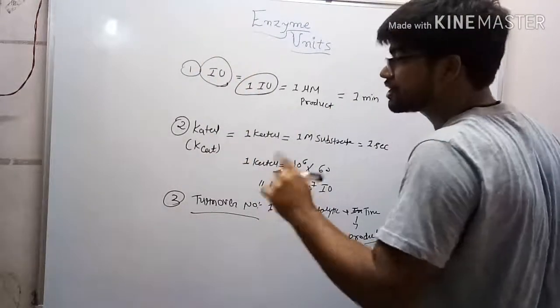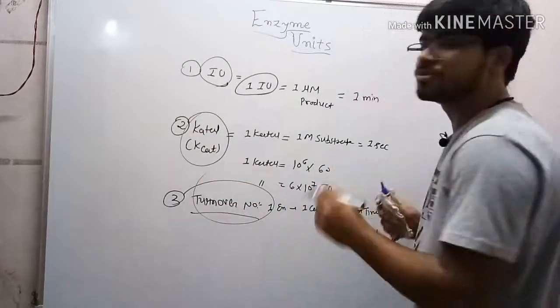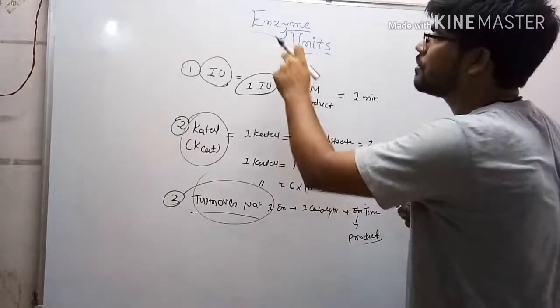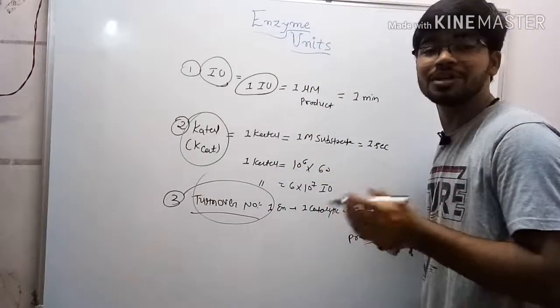So we saw three units: one is the IU or international unit, the second one is the katal unit, and the third one is turnover number. These are mostly used to determine or describe the quantity of enzyme. I hope you understand, thank you.